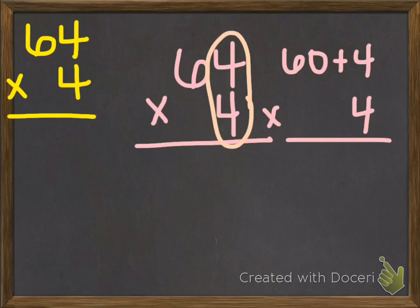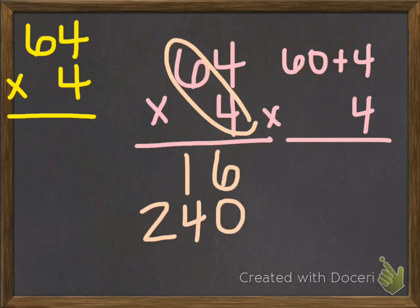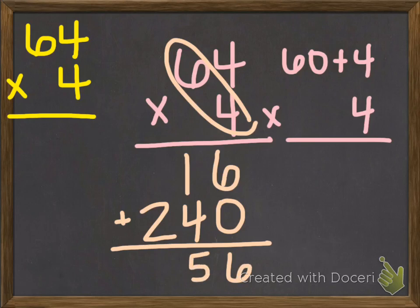4 times 4 is 16. Next, 4 times 60 is 240. My last step is to add the two partial products. And that's where I get my answer, 256.